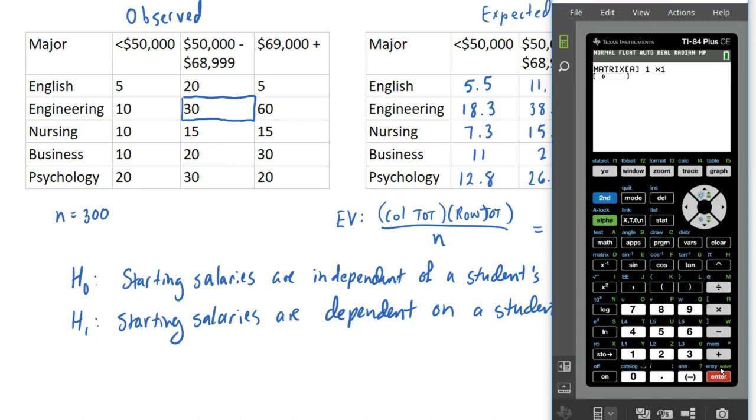So the first thing to do is enter how many rows and columns your matrix has, not including column and row headings. So if we look at our observed data here, there are five rows that have numerical entries and there are three columns. So I'm going to make this a five by three matrix. So go ahead and make that five by three, press enter, and it will give you a five by three matrix.